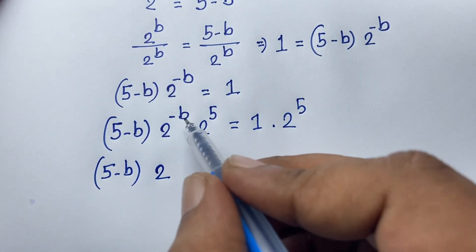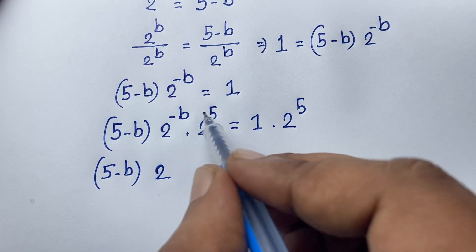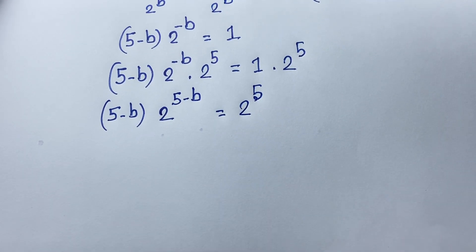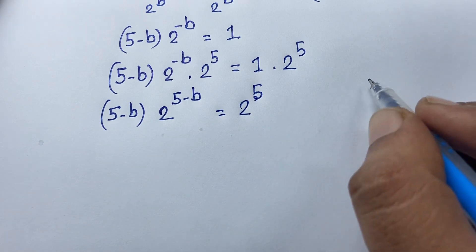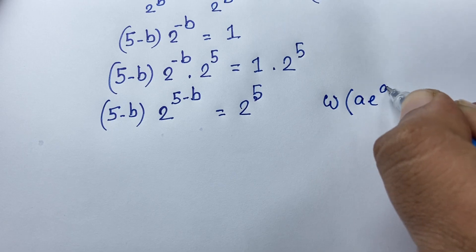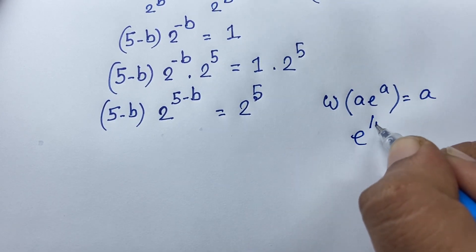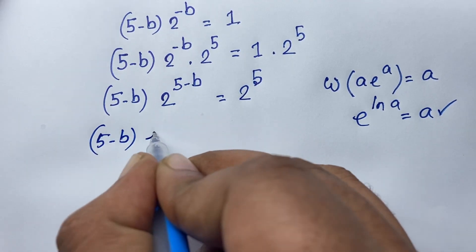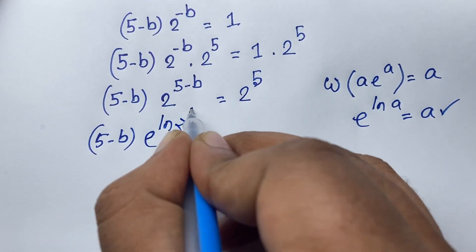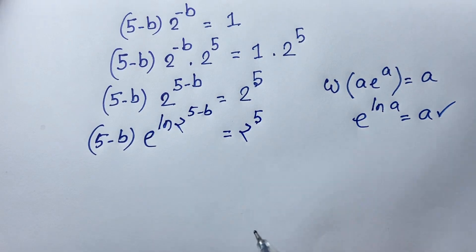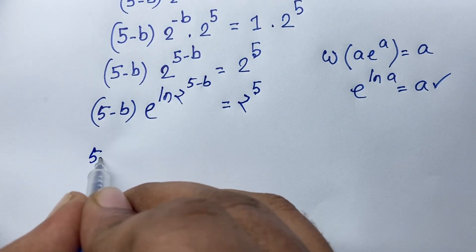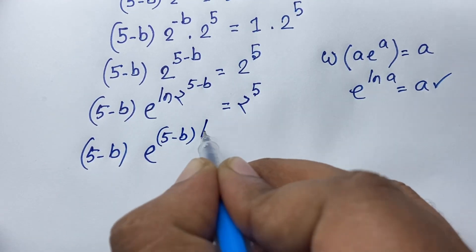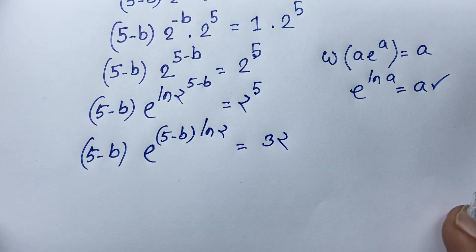According to the exponential law, we add the exponents: minus b plus 5 gives us 2 to the power (5 minus b). So we have (5 minus b) times 2 to the power (5 minus b) is equal to 2 to the power 5, which equals 32. Now I want to convert this using e to the power ln: 2 to the power (5 minus b) becomes e to the power (ln 2 times (5 minus b)).